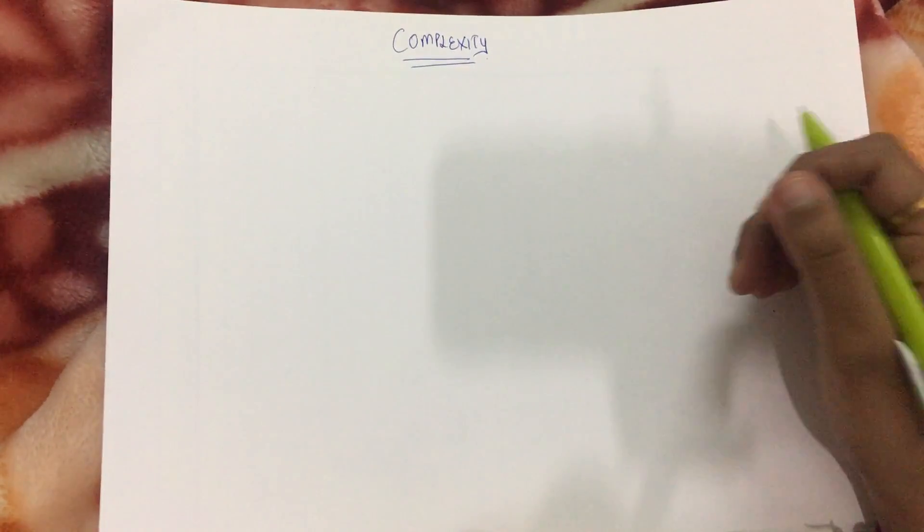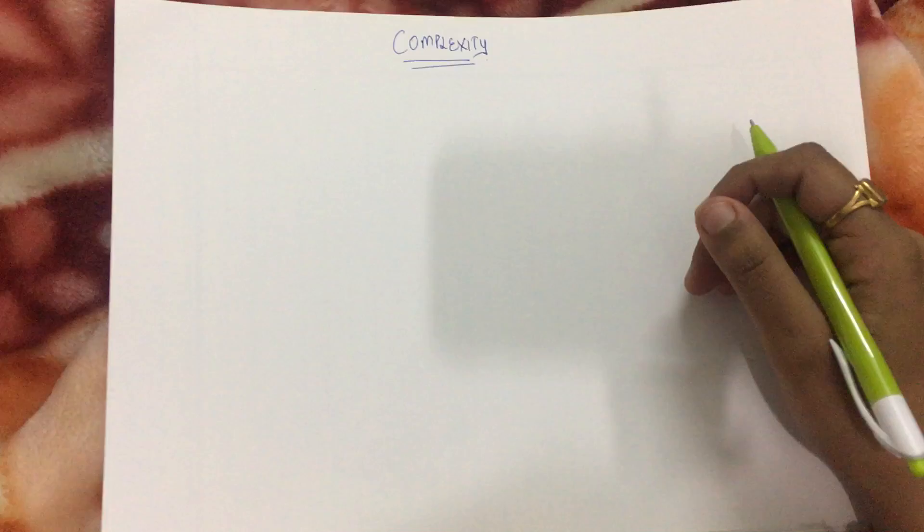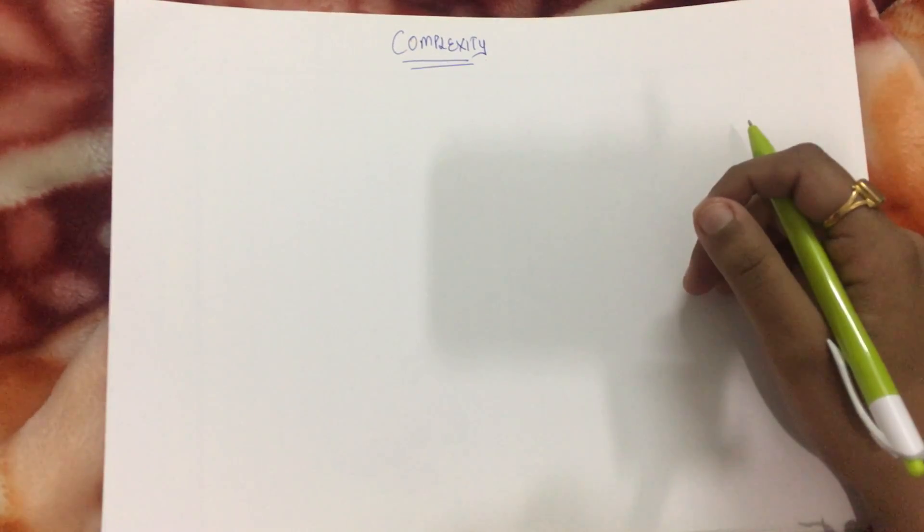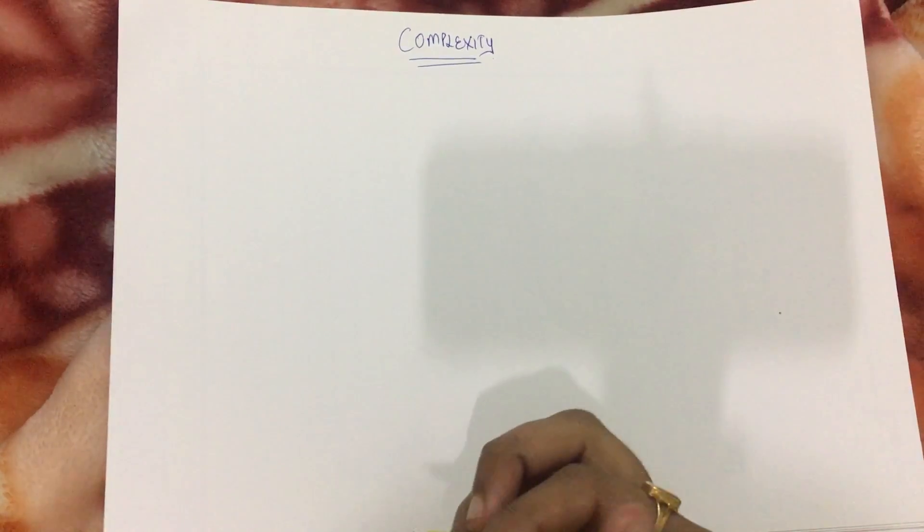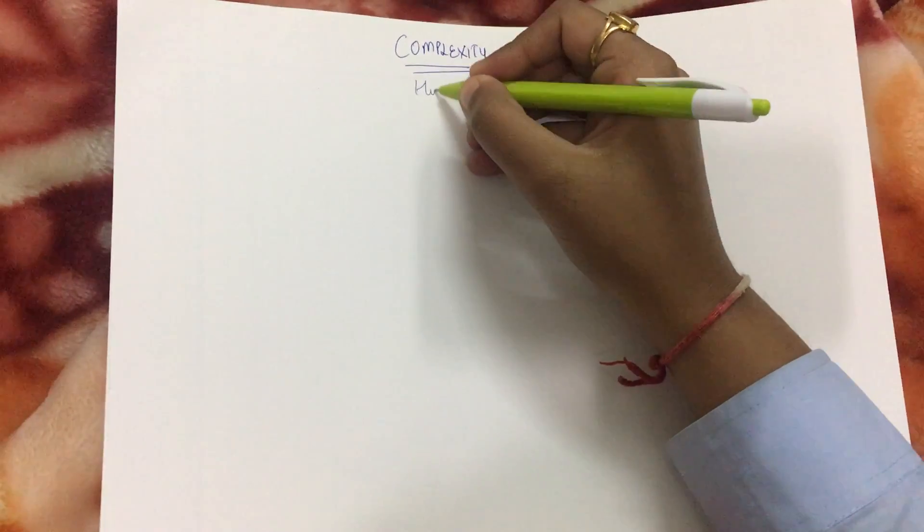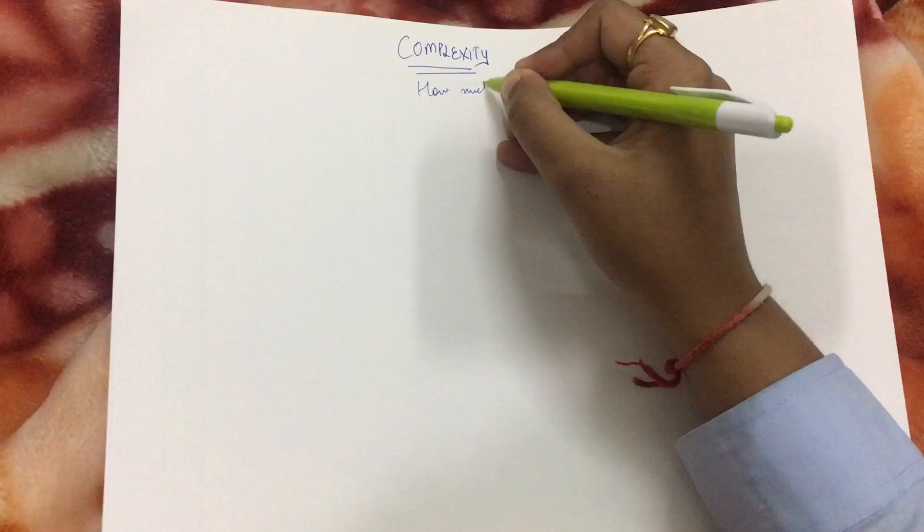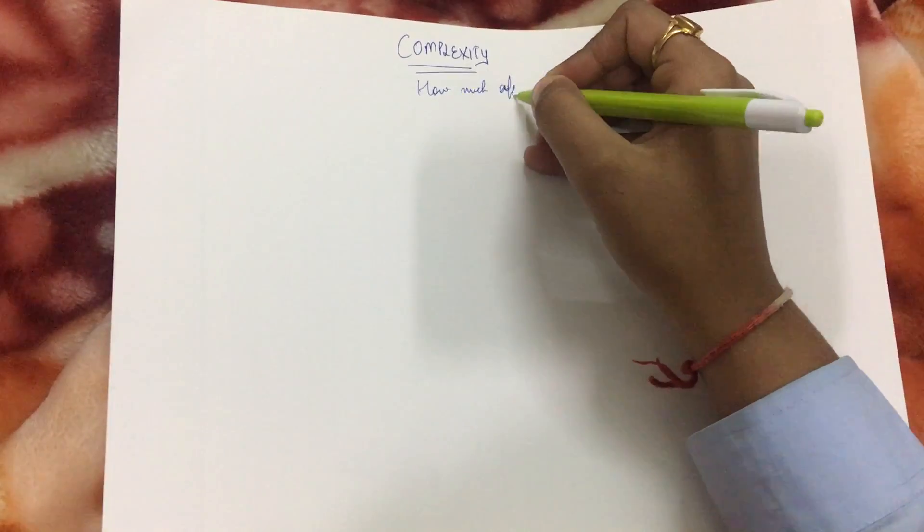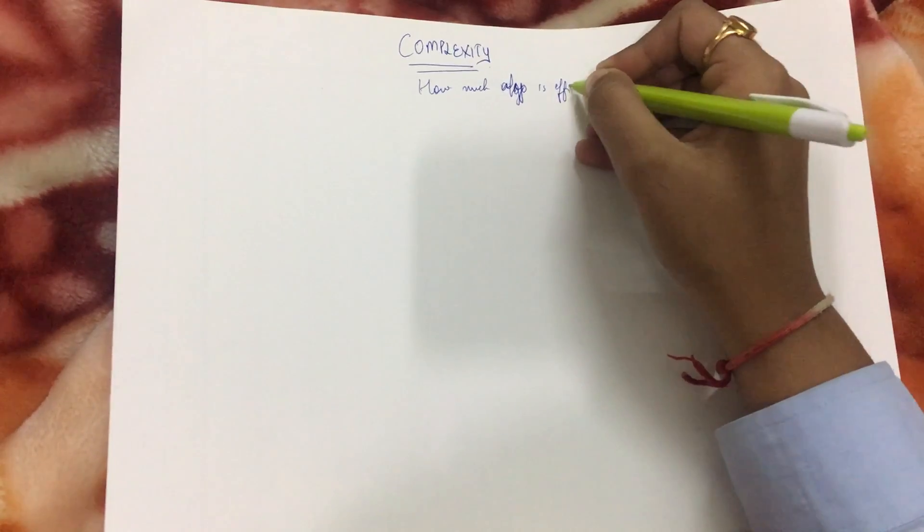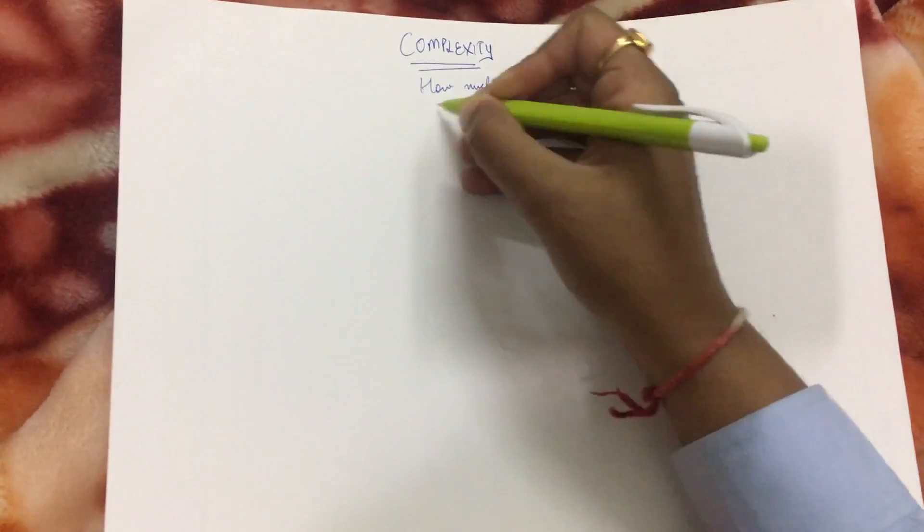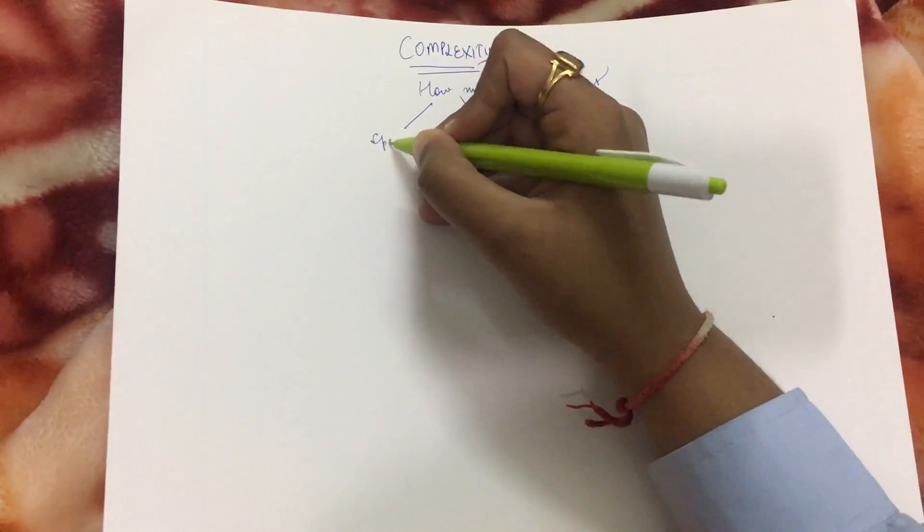Hello everyone, today we are going to study about the complexity of algorithms. Complexity is a parameter that defines how much our algorithm is efficient. It tells me how much the algorithm is efficient. As you all know, it is of two types: space and time.